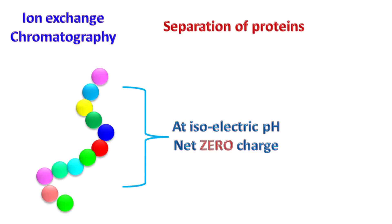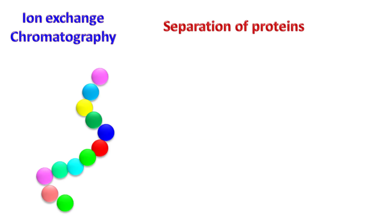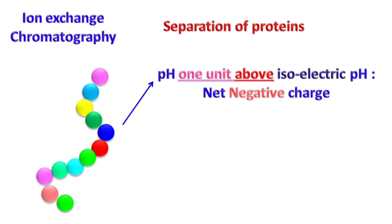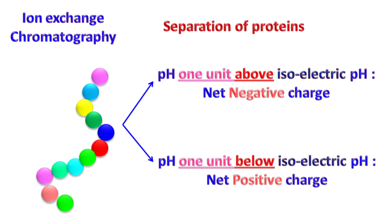Let's understand the separation of proteins with ion exchange chromatography. At isoelectric pH, the net charge on the protein is zero — that is, proteins have equal numbers of positive and negative charges. If the pH is shifted one unit above the isoelectric pH, then the protein will have a net negative charge. If the pH is shifted one unit below the isoelectric pH, then the protein will have a net positive charge.